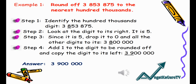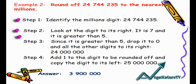Step 2: Look at the digit to its right — it is 5. Step 3: Since it is 5, drop it to zero and all the other digits to its right. Step 4: Add one to the digit to be rounded off and copy the digit to its left. The answer is 3,900,000.